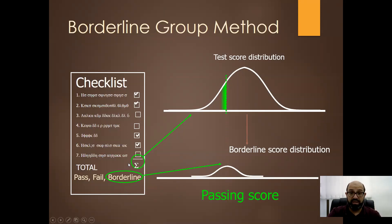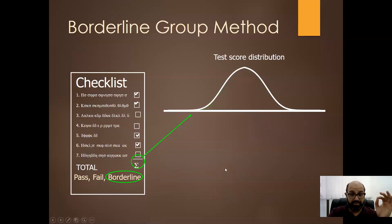So he determines whether this is a fail, pass, or borderline and we draw a curve for the total scores of the borderline group and this is our passing score. The mean of the scores of the borderline group is our passing score.